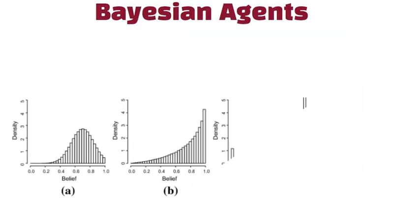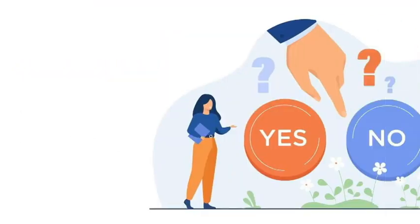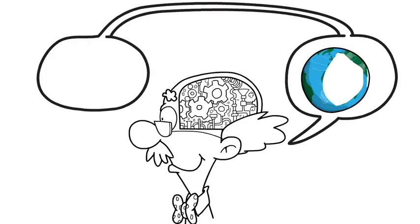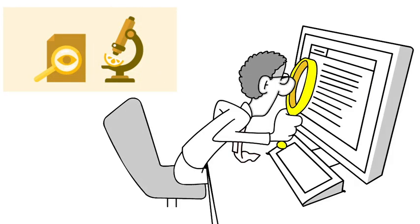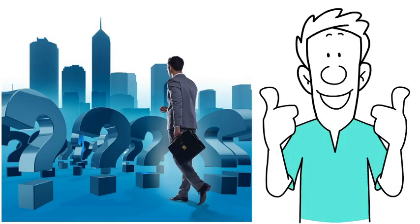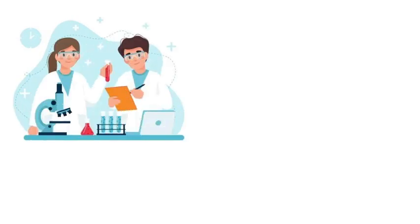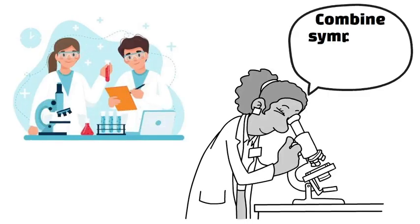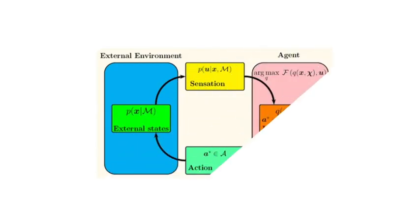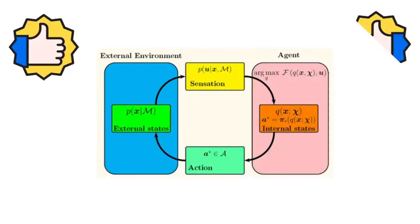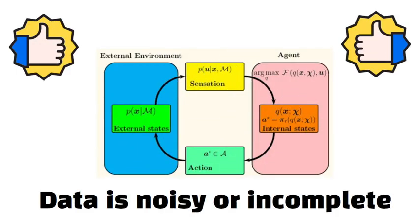Bayesian agents use probability and statistics to make decisions. They work by updating their beliefs about the world as new information comes in — think of them as constantly adjusting a balance scale. When new evidence is presented, they recalculate the odds of different outcomes. This method allows them to handle uncertainty in a principled way. For instance, in medical diagnosis, a Bayesian agent might combine symptoms and test results to determine the most likely condition. Their reliance on mathematical probability makes them especially useful in fields where data is noisy or incomplete.